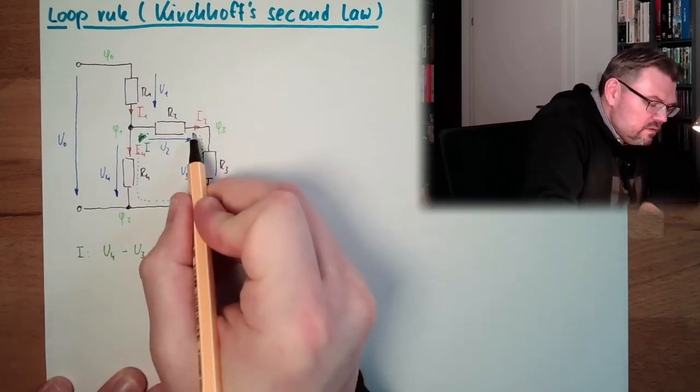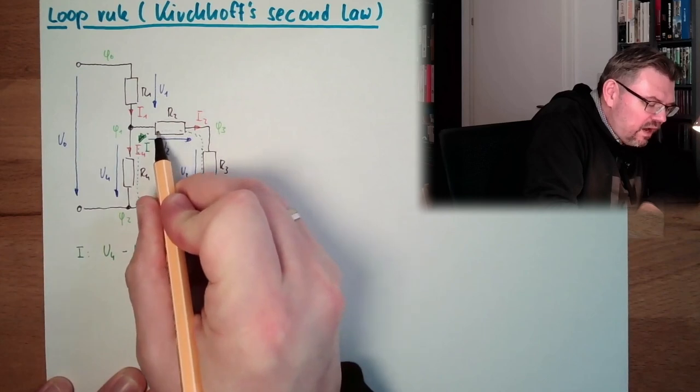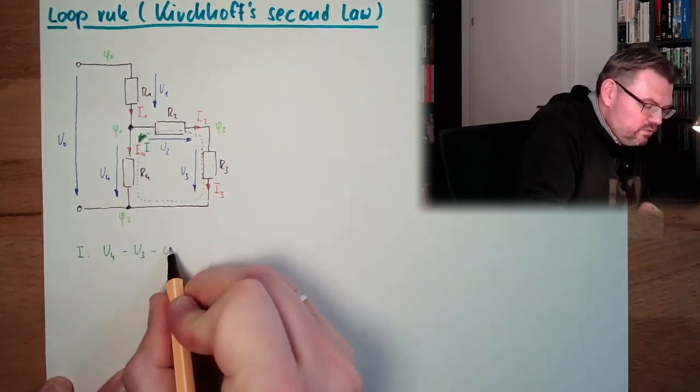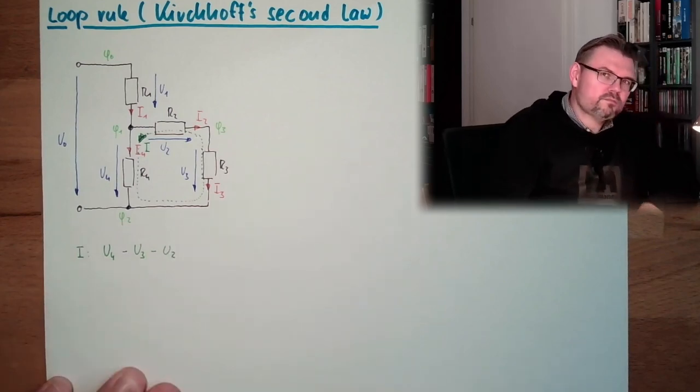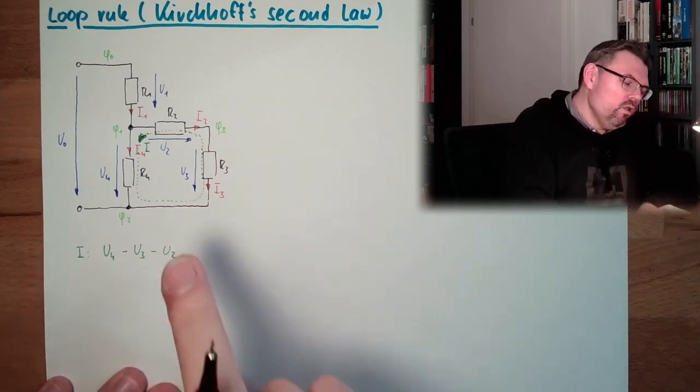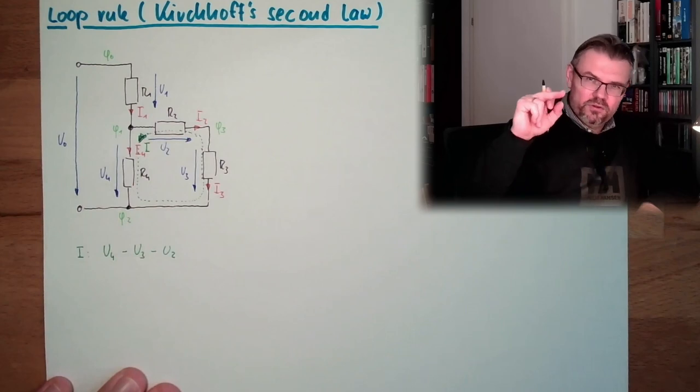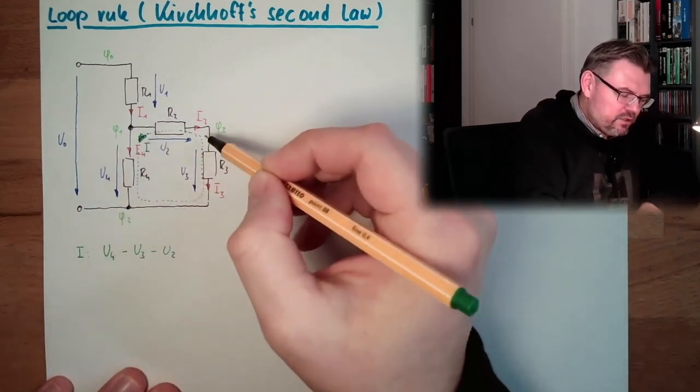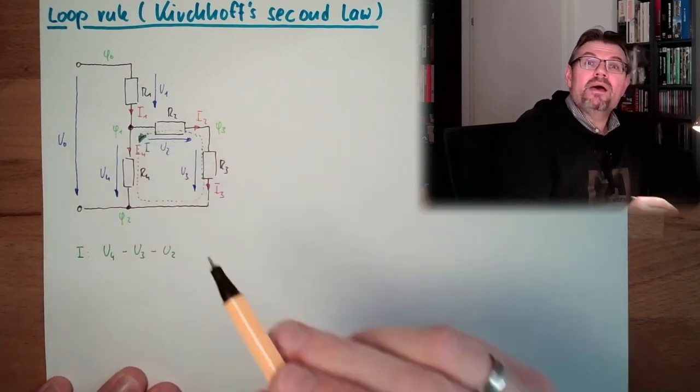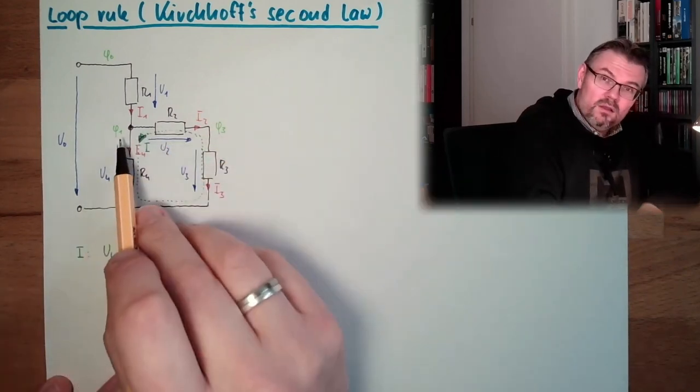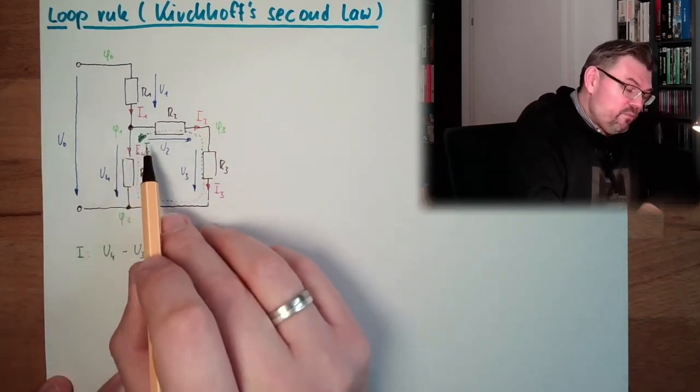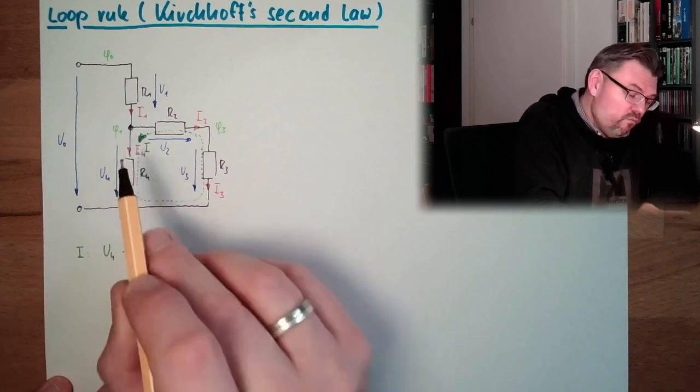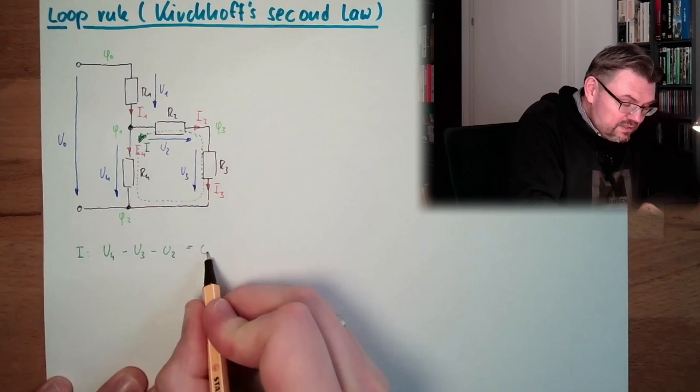And here we are passing now U2, minus U2. And since all of those voltages are potential differences, we are summing up all potential differences and ending up at the same potential V1. So basically what we can say is that between here and here we have zero volts, so this equals zero volts.